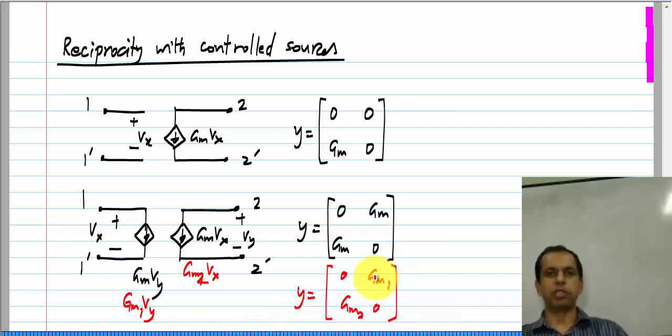If the two controlled sources have equal coefficients, this particular network is reciprocal, otherwise it is not. You cannot make a general statement in case of circuits having controlled sources.